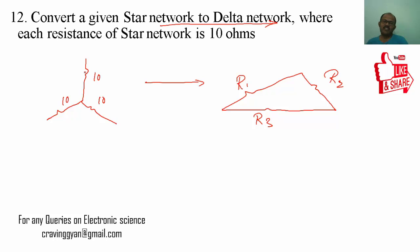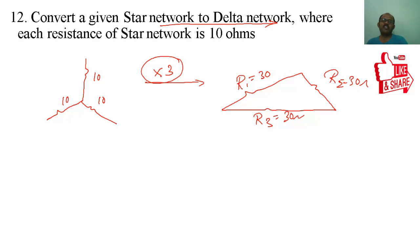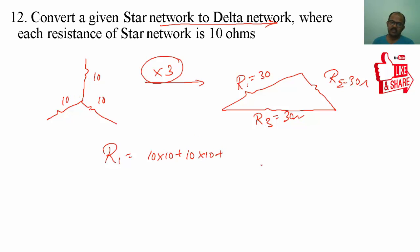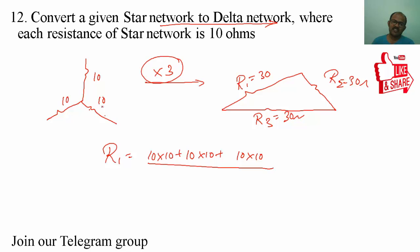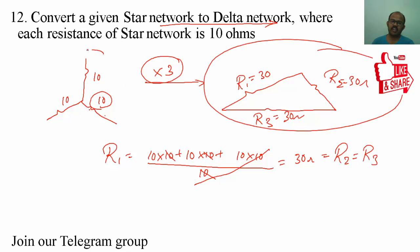We know that if all the resistances are equal, then you multiply by 3 to get the equivalent resistance — that is 30 ohms, 30 ohms, and 30 ohms. Using the standard procedure: R1 = (10×10 + 10×10 + 10×10) / 10 = 30 ohms, which is the same as R2 and R3. So this is the equivalent delta network for the given star network.